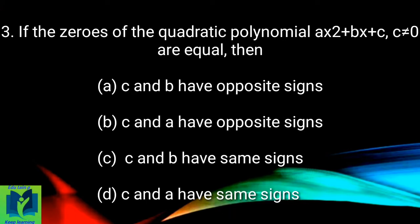If the zeros of the quadratic polynomial ax² + bx + c, where c is not equal to zero, are equal, then: (a) c and b have opposite signs, (b) c and a have opposite signs, (c) c and b have same signs, (d) c and a have same signs.